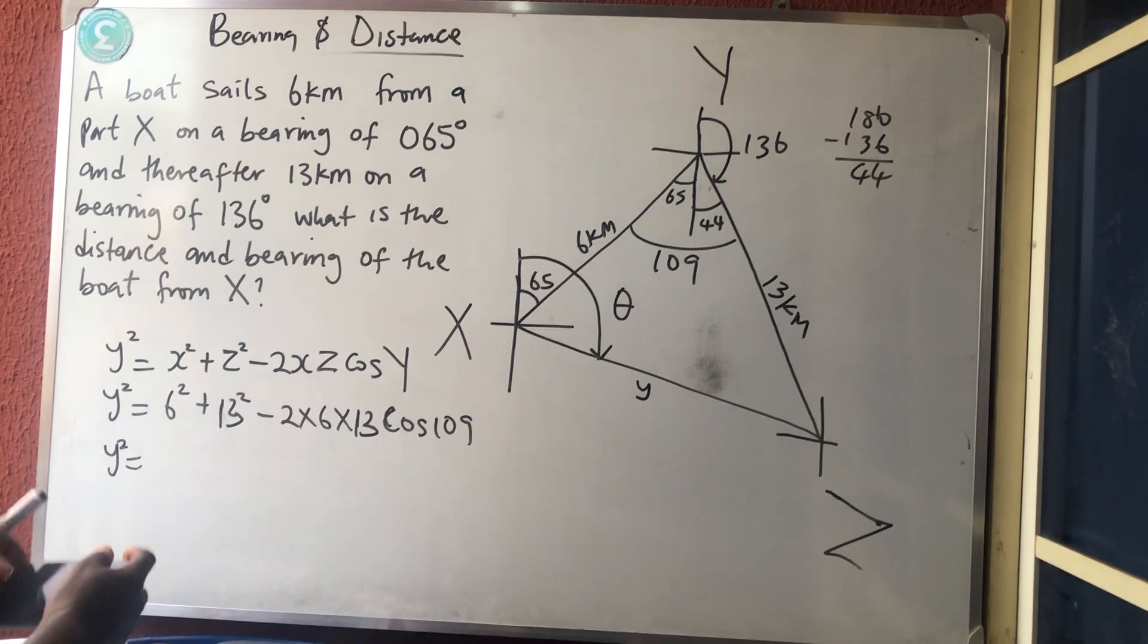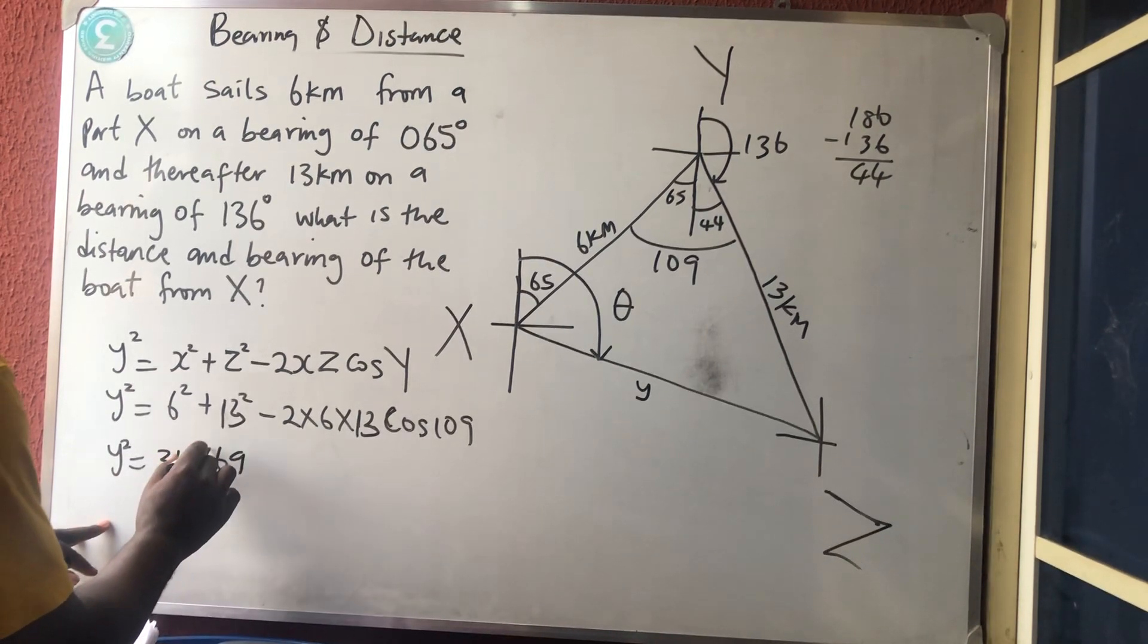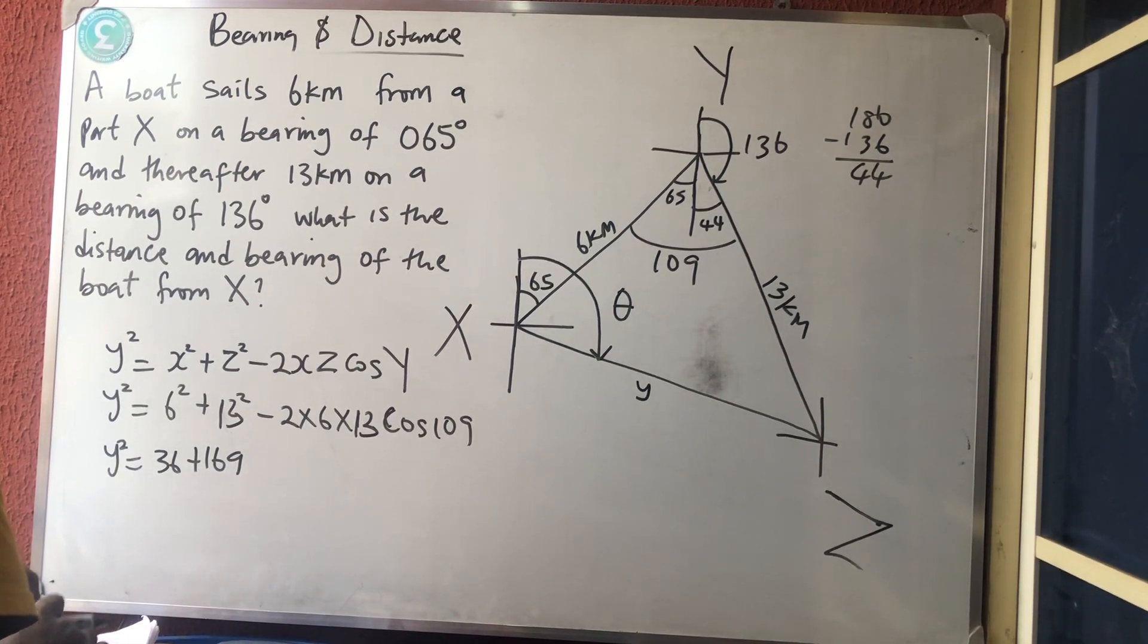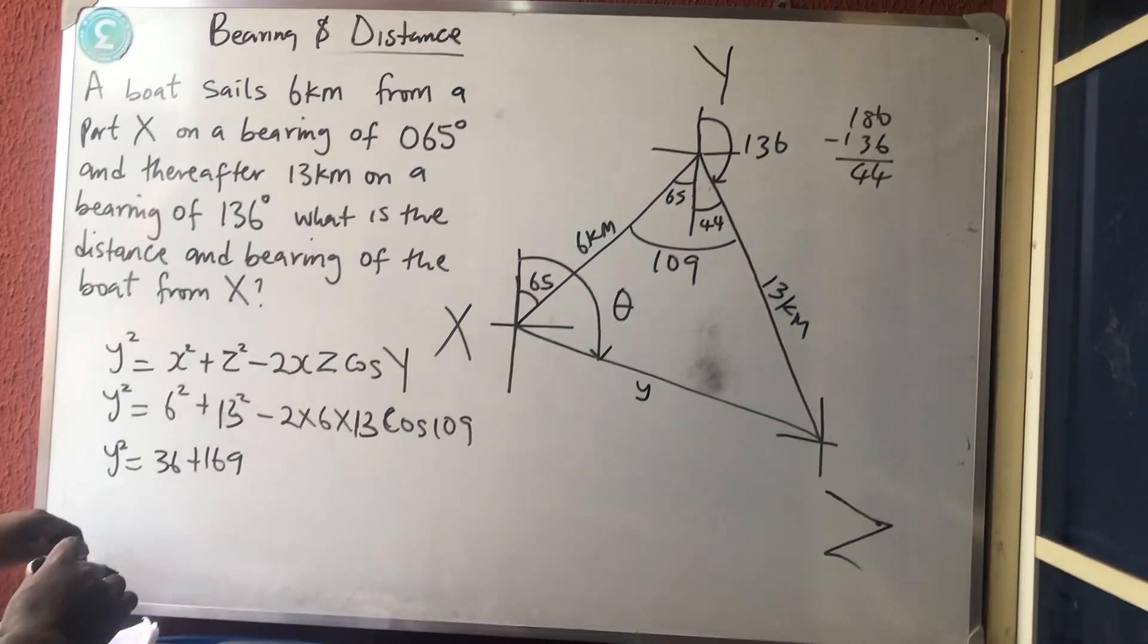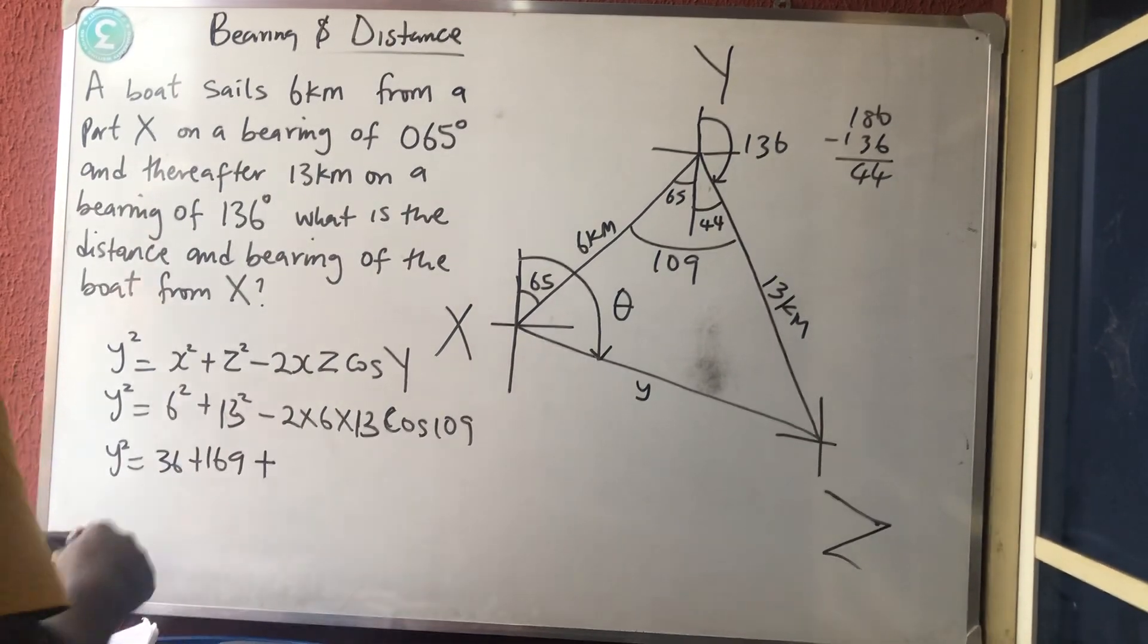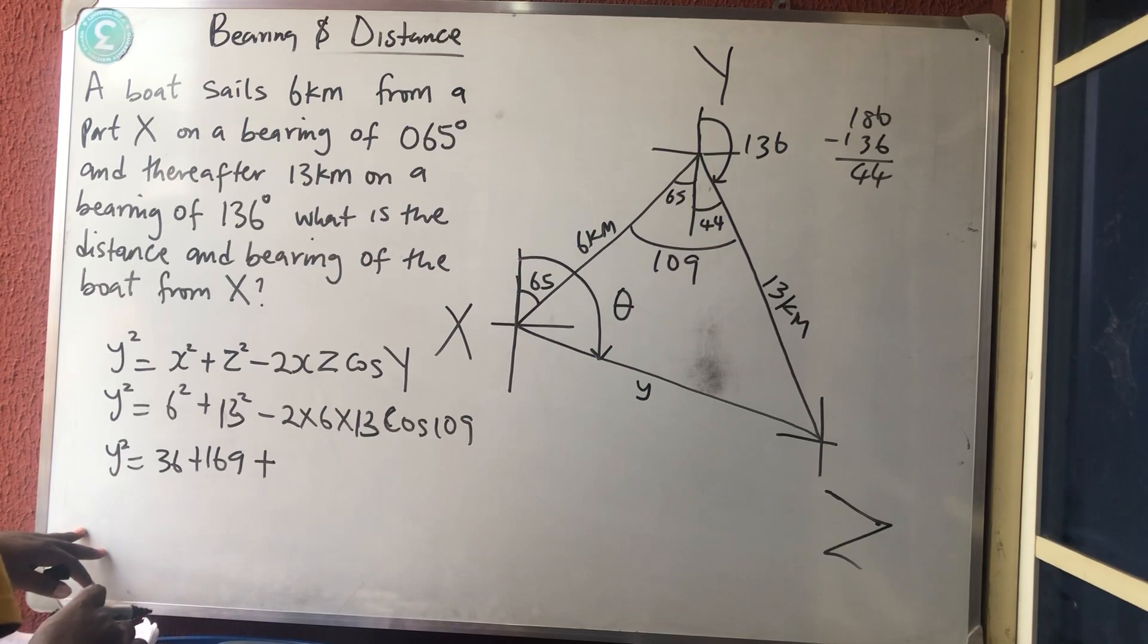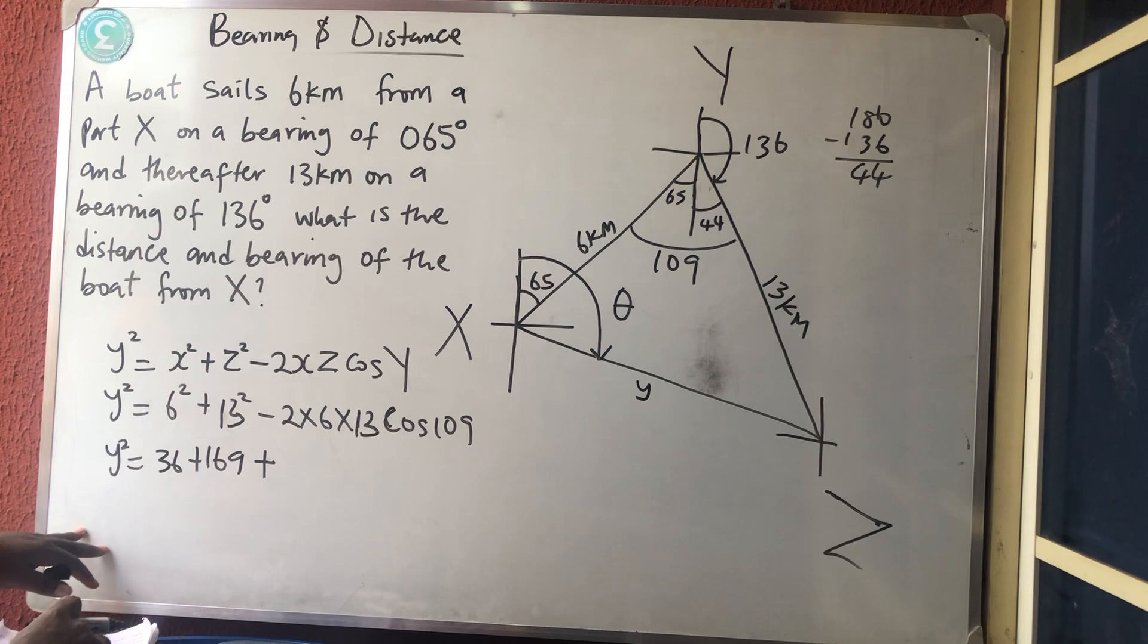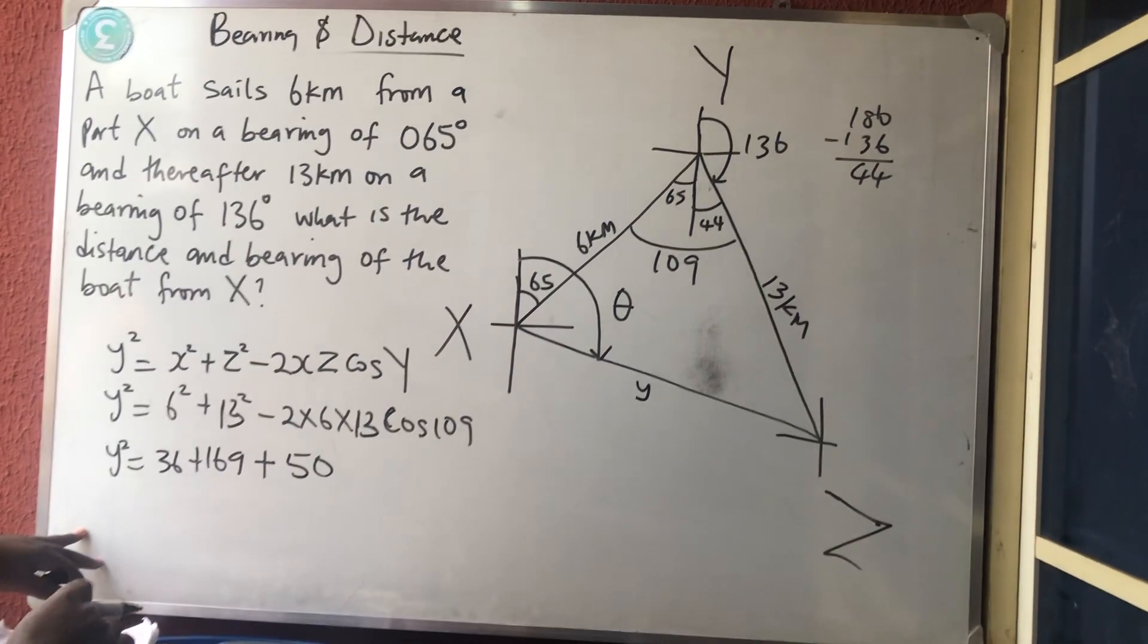So therefore my y² equals, let's do that. I have 6² is 36 plus 169. Cos 109° is giving us minus, so minus with this minus will make it a plus. So times 13 times 12.